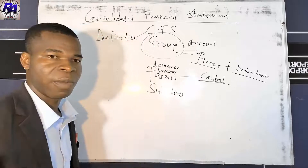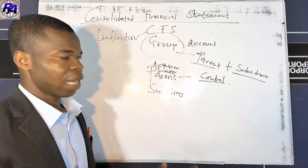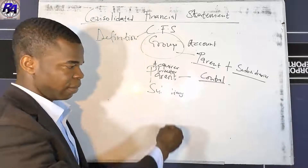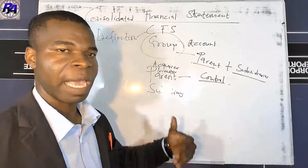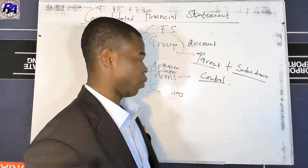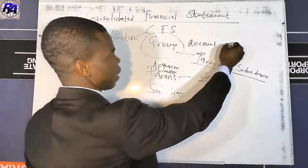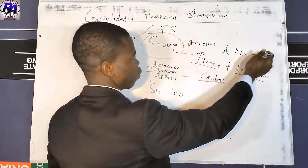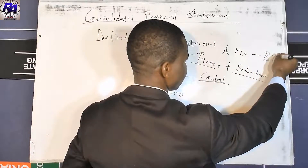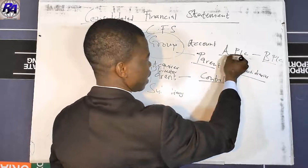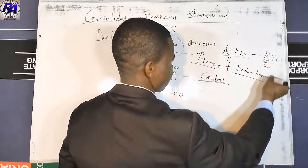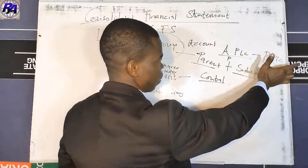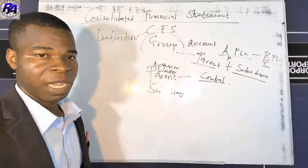A subsidiary is basically an entity that is controlled by another entity. Entities controlled by another entity are referred to as subsidiaries. In a typical example, if A PLC has obtained control over B PLC, then A is the parent and B is the subsidiary.